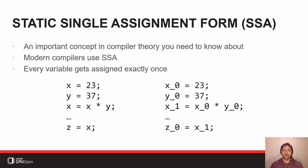Imagine the compiler analyzes the assignment from x to z at the bottom and wants to do constant propagation. In order to do that, it needs to know where the value of x is coming from at that point in the program. Since x was assigned to multiple times, that's not immediately obvious. You could add an analysis to the compiler to figure that out, but this kind of problem arises so often that it would eat into your compile time performance. SSA really helps because by having every variable assigned to only once, we can immediately tell where the value in each variable comes from.